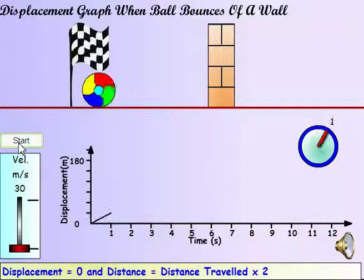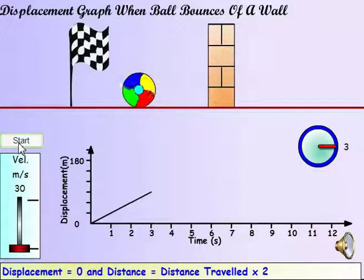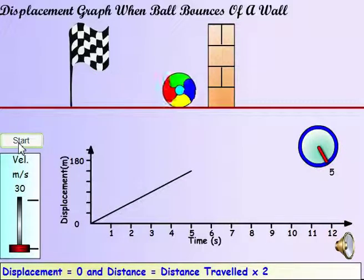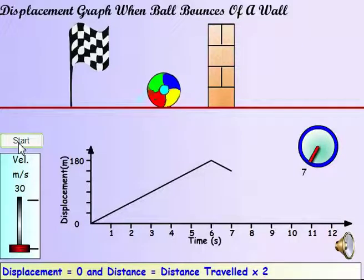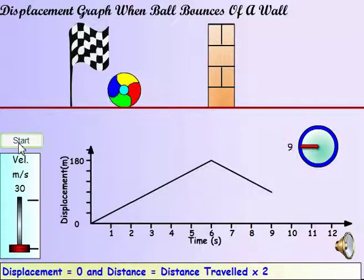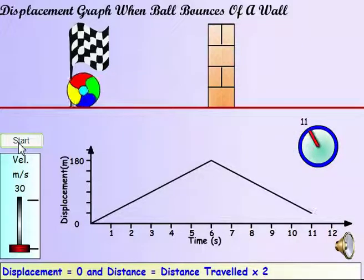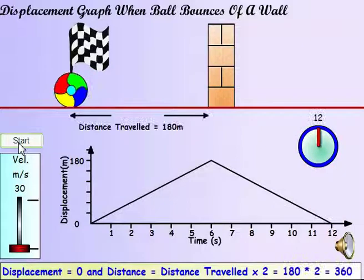The ball comes back to its original position, so its displacement is zero. But the distance traveled is twice the distance between the original position of the ball and the wall.